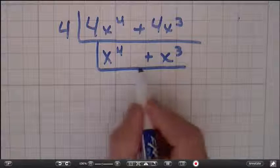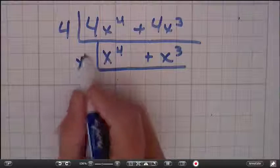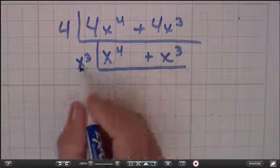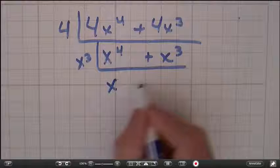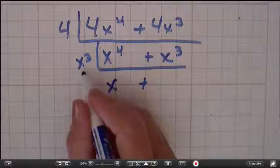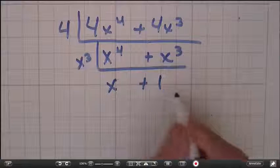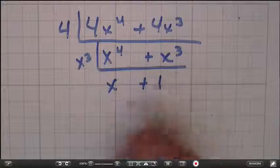What can I take out of both of these? I can take an x to the 3rd out. x to the 4th divided by x to the 3rd leaves me 1x. x to the 3rd divided by x to the 3rd is 1. And now I'm done, because I can't take anything else out of here.